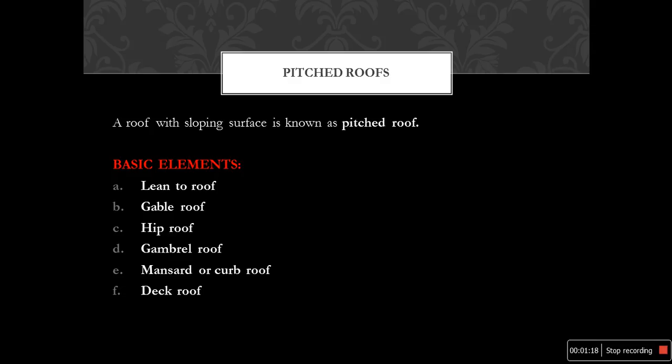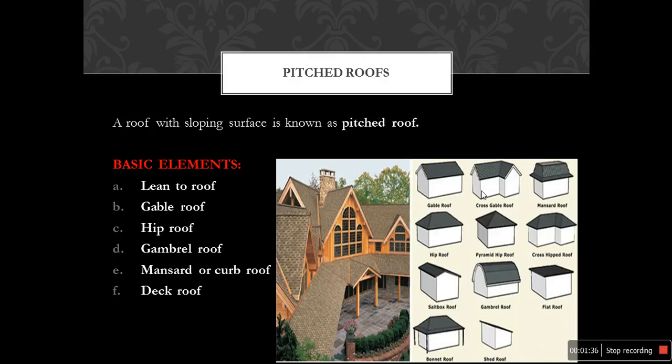A pitched roof is also called a slope roof. In general terms, the roof with a sloping surface is known as a pitched roof. The basic types are: lean-to roof, gable roof, hip roof, gambrel roof, mansard or curb roof, and deck roof. Based on purpose and shape, types include gable roof, cross gable roof, mansard roof, hip roof, pyramid hip roof, cross hip roof, salt box roof, gambrel roof, flat roof, bonnet roof, and shed roof.